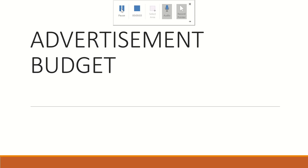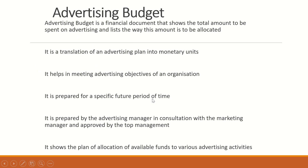Today we will learn what is an Advertisement Budget. Advertising Budget is a financial document that shows the total amount to be spent on advertising and is the way this amount is to be allocated. It is the translation of an advertising plan into monetary units, and it also helps in meeting advertising objectives of an organization. It is prepared for a specific future period of time.